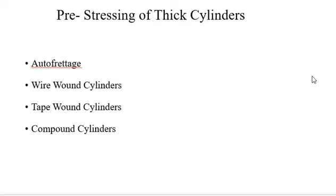In order to use the material of any kind of cylinder very effectively and to achieve uniform stress distribution across the cylinder wall thickness, pre-stressing is done. In the pre-stressing method, compressive stresses are induced at the inner surface and tensile stresses are induced at the outer surface of the cylinder. When the cylinder is loaded in service, the compressive stress at the inner surface begins to decrease.